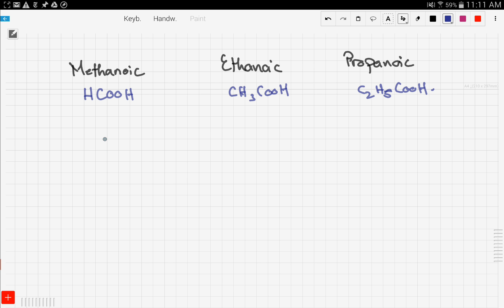For methanoic acid, we put the C, and here we have a hydrogen, and here is a double bond, and here is the OH. This is how you draw the structure of carboxylic acids. We have a double bond and one OH bond.